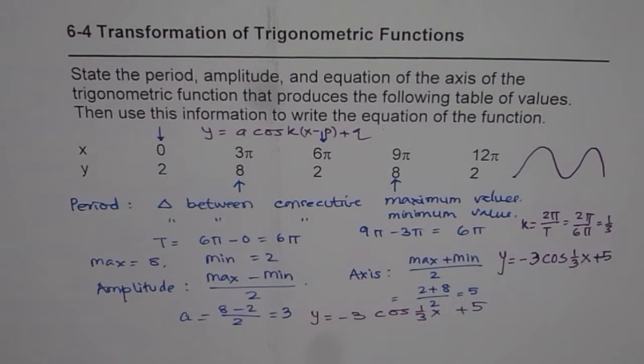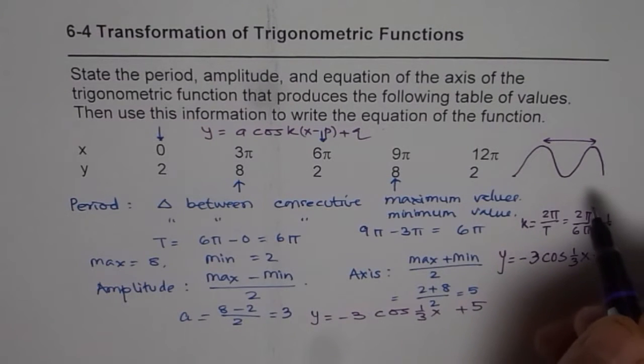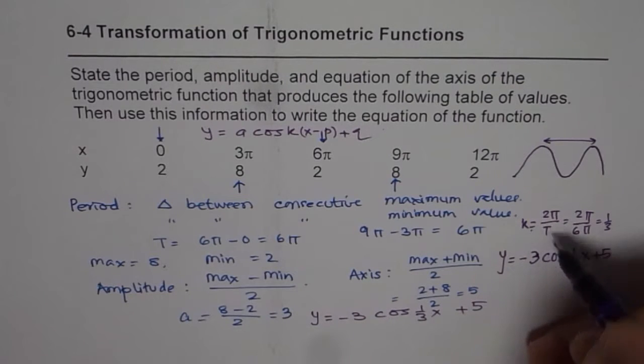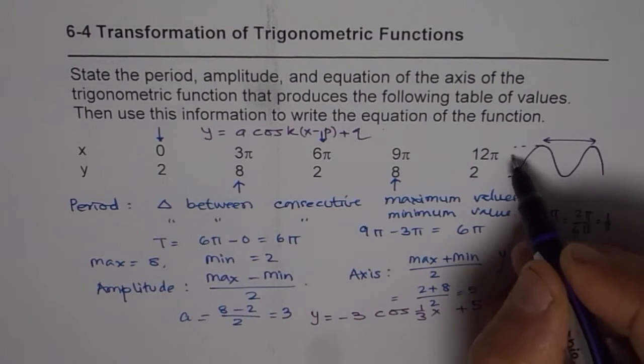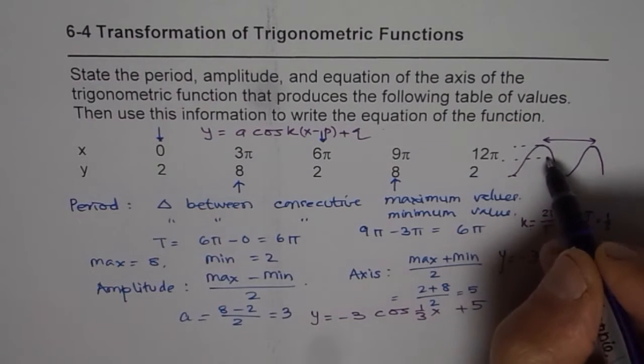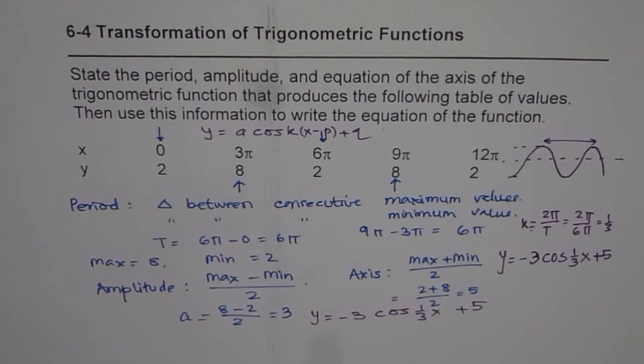To summarize: when given data, find the difference between two consecutive maximum points to get the period. Then k = 2π/period. For amplitude, calculate (max - min) ÷ 2. For the axis, find the average: (max + min) ÷ 2. That is how you can answer these questions. I hope that helps. Thank you.